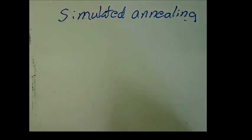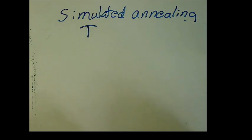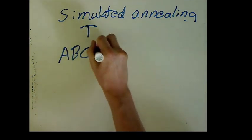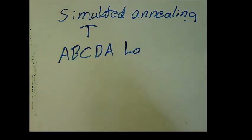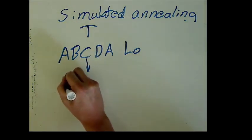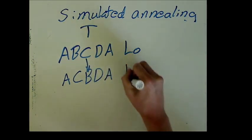The way we use this concept to give us a good answer to the traveling salesman problem is by defining a temperature T. And at each step of the algorithm, we look at our current path, let's say it's A, B, C, D, A with length L0 and compare it to an adjacent path. An adjacent path is obtained by switching the order of two cities in our path. So for example, an adjacent path could be A, C, B, D, A with length L1.